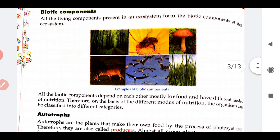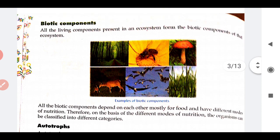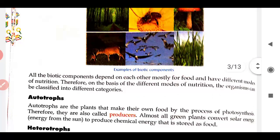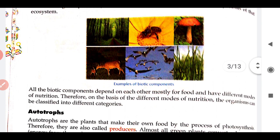All the living components present in an ecosystem form the biotic component of that ecosystem. All living components which are present in the atmosphere are biotic components. For example, you can see in the picture: bird, plants, mushroom which is fungus, goat and other plants, honey bee — all these are living components and are also called biotic components.